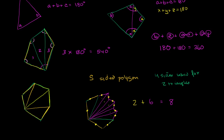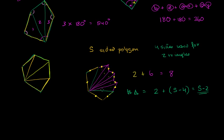So the number of triangles is going to be equal to 2 plus s minus 4. And 2 plus s minus 4 is just s minus 2. So if I have an s-sided polygon, I can fit s minus 2 triangles that perfectly cover that polygon without overlapping. Which tells us that an s-sided polygon has interior angles summing to (s minus 2) times 180 degrees.